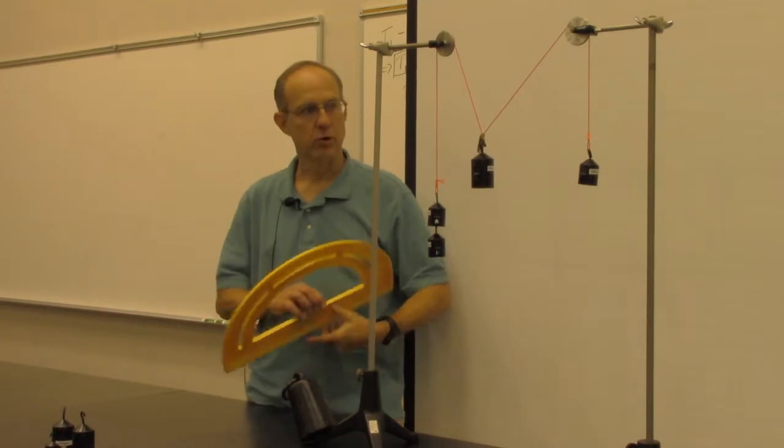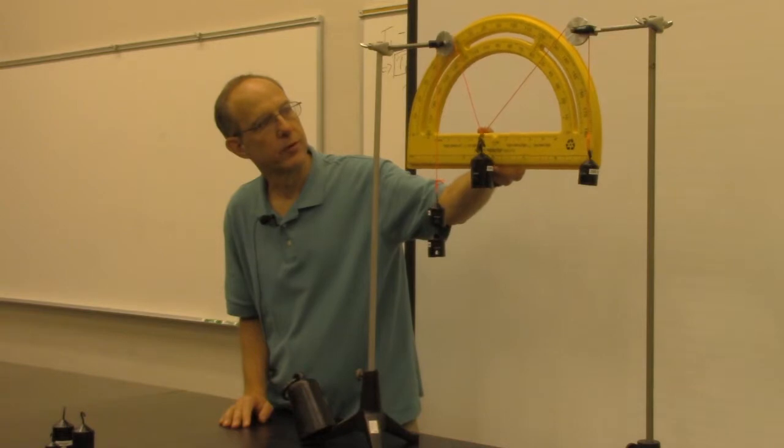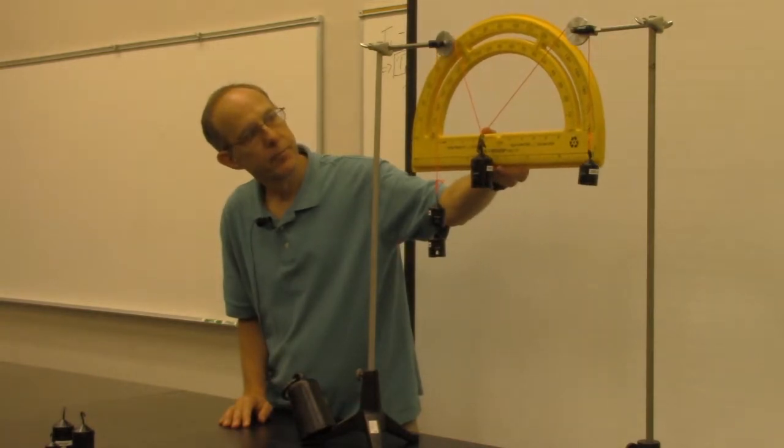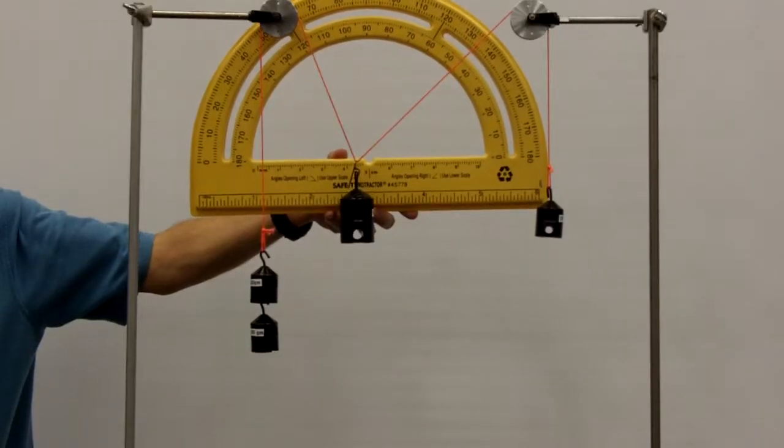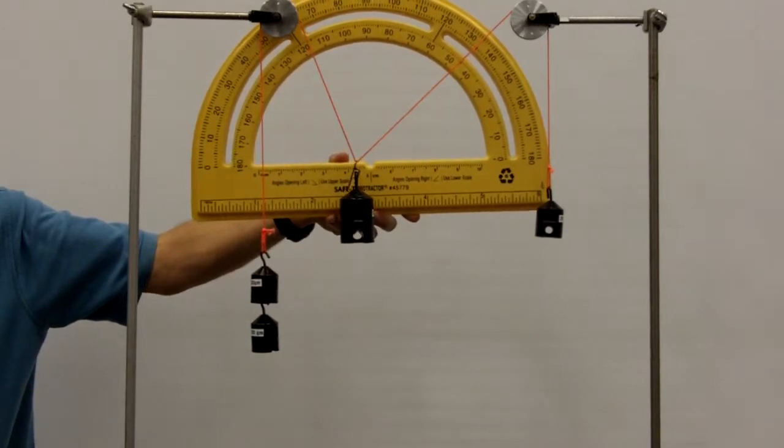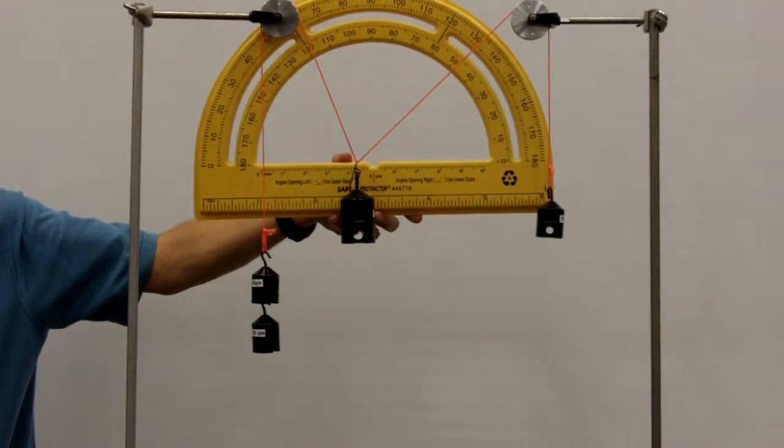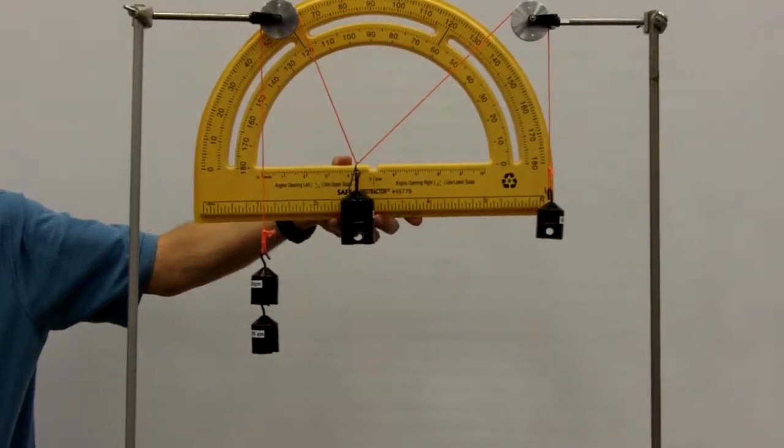Using a protractor, then we can demonstrate to the students roughly what those angles are. In this particular case, it should be about 40 degrees towards the right and about 67 or so degrees towards the left.